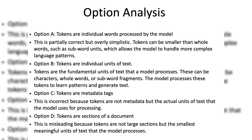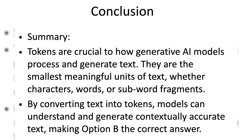Option C: tokens are metadata tags. This is incorrect because tokens are not metadata, but the actual units of text that the model uses for processing. Option D: tokens are sections of a document. This is misleading because tokens are not large sections, but the smallest meaningful units of text that the model processes. By applying this reasoning, Option B is the correct answer.